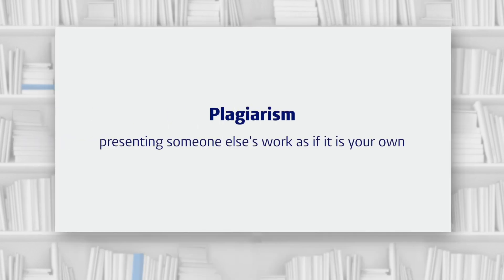Now, what happens if we don't show in a transparent, traceable way where our information comes from? Well, it might look like we made everything up and didn't use any sources. But it can also look like we're stealing other people's work. This is known as plagiarism. Plagiarism means presenting someone else's work as if it's your own. In the academic world, this is seen as a very serious offense.